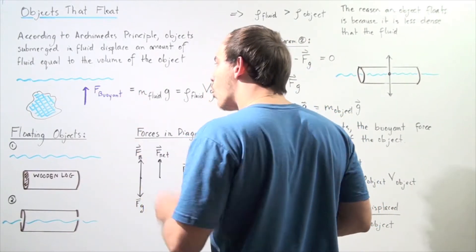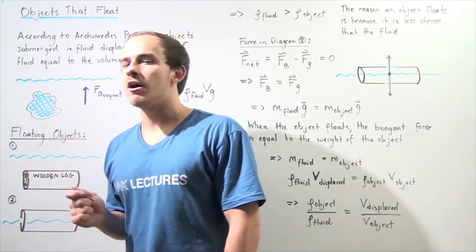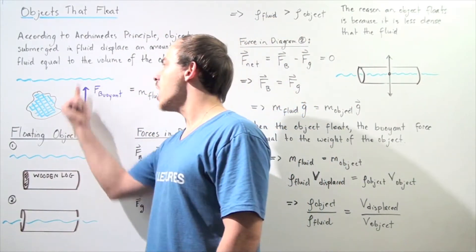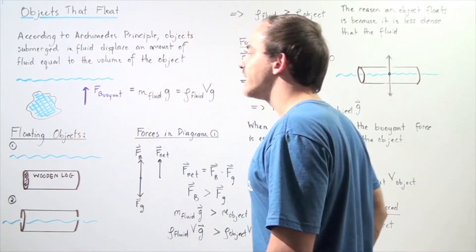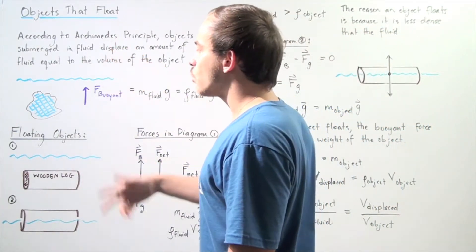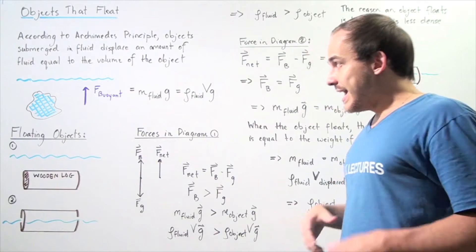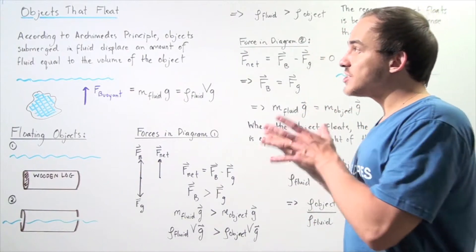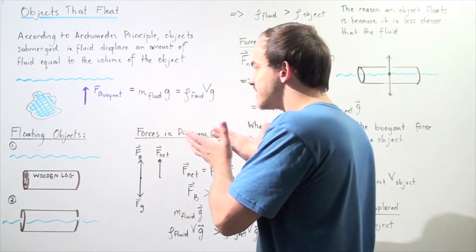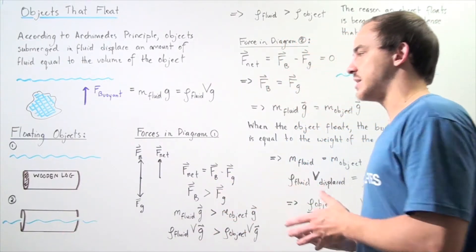The buoyant force always points in the opposite direction of the force of gravity — it points upward along our y-axis when the force of gravity points downward along the y-axis. That is what Archimedes' Principle is; this is the statement that Archimedes' Principle gives us.